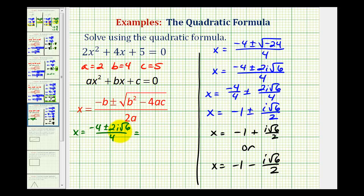and factor out the greatest common factor from the numerator, we would have 2 times the quantity negative 2 plus or minus i√6 divided by 4, which we can write as 2 times 2. And now we have a common factor of 2 here and here that would simplify out,